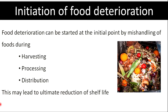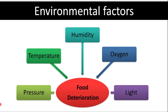Food damage can start at the initial point by mishandling of foods during harvesting, processing, and distribution. This may lead to ultimate deterioration of foods due to mechanical factors. During storage and distribution, foods are exposed to a wide range of environmental conditions. Environmental factors such as pressure, temperature, humidity, oxygen, and light can trigger severe reactions that may lead to food degradation. As a consequence of these mechanisms, food may alter to such an extent that they are either rejected by the consumer or harmful to the consumer.